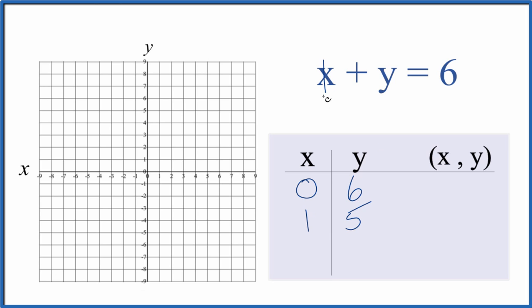We could just use two points to graph the equation x plus y equals 6, but it's better to have 3 in case you make an error. So let's say x is 2. If x is 2, then 2 plus y equals 6. Subtracting 2 from both sides, y equals 6 minus 2, which is 4.